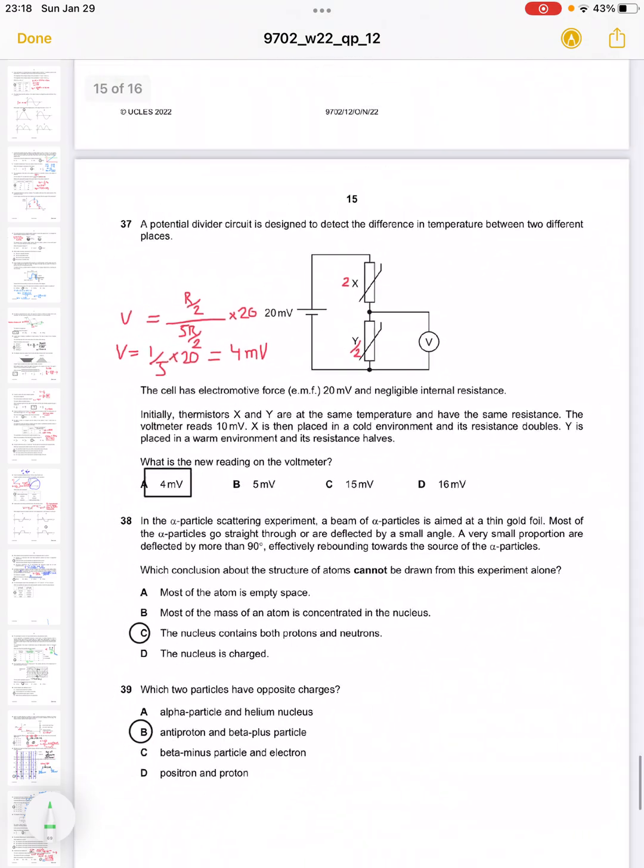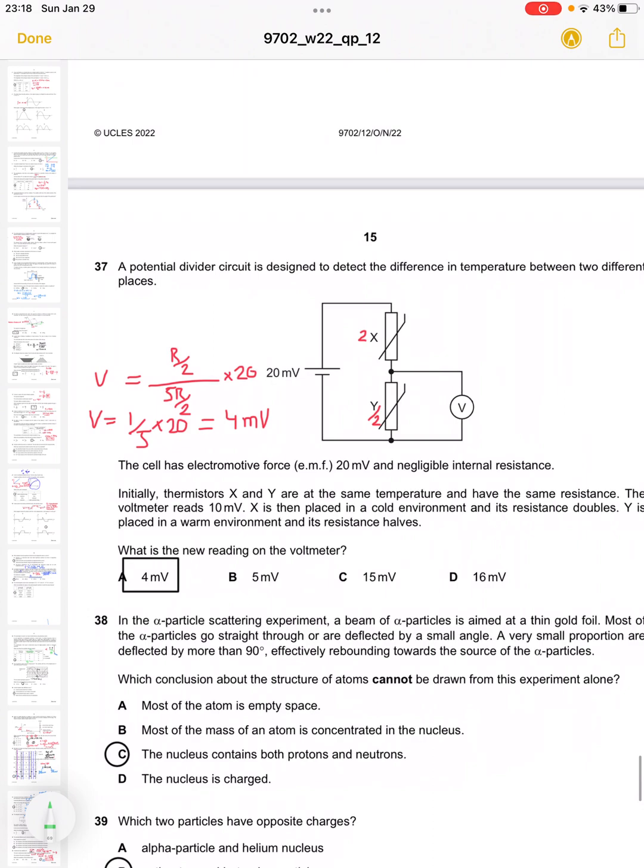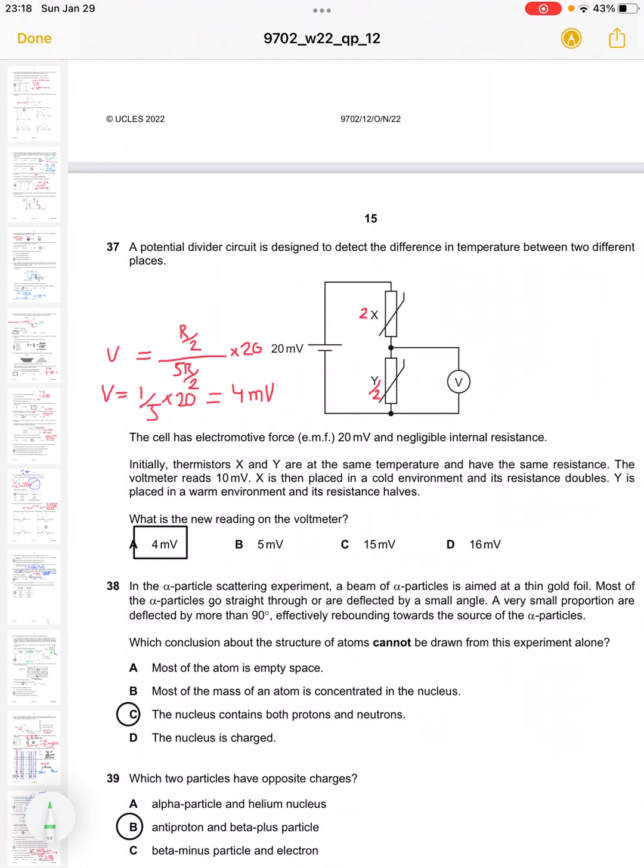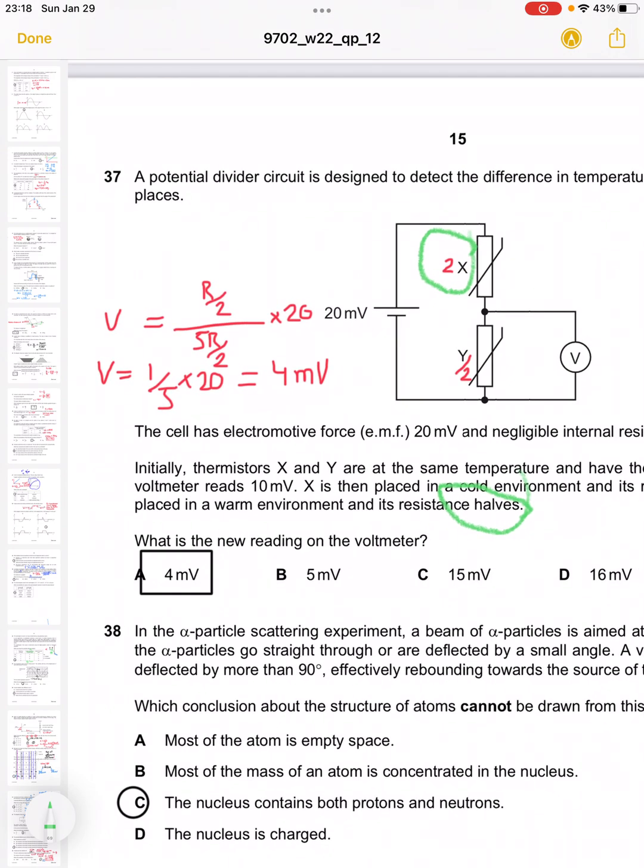Question 37 asks what is the new reading on the voltmeter. Two conditions are given: before, resistances X and Y were the same, and the EMF is 20 millivolts. After, one resistor X is placed in a cool environment and the resistance doubles to 2R, and Y is placed in a warm environment and the resistance halves to R over 2. The new reading becomes R over 2 over 5R over 2, which makes the voltage 1 over 5 into 20, which is 4 millivolts. A is the appropriate answer.